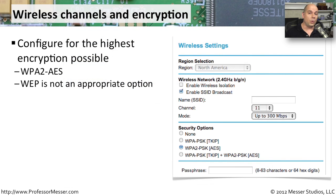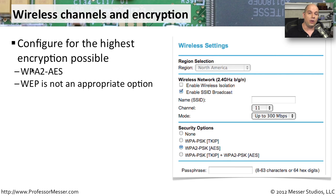When configuring the wireless settings on your access point or wireless router, you want to configure the highest possible encryption. The highest you should find is WPA2, sometimes spelled out as WPA2-AES — that is the highest you would use. You obviously don't want to use WEP, as it has serious vulnerabilities, and usually you won't even see it as an option on newer devices.